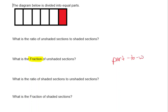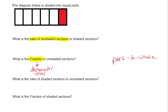A part-to-whole ratio — for example, 'what is the fraction of unshaded sections?' — means you want to write how many are unshaded out of the total. When they say fraction, you know the denominator is going to represent the total number, in this case the total number of sections.